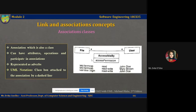These are the objects created for the File class and for the User class. For the 'accessible by' association class, John Doe may have only read permission for a file, Mary Brown may have read-write permission, and John Doe may have read-write permission for another file. Since the association class has the attribute 'access permission' which can take multiple values such as read and write, it is represented as an association class rather than simply as an association.